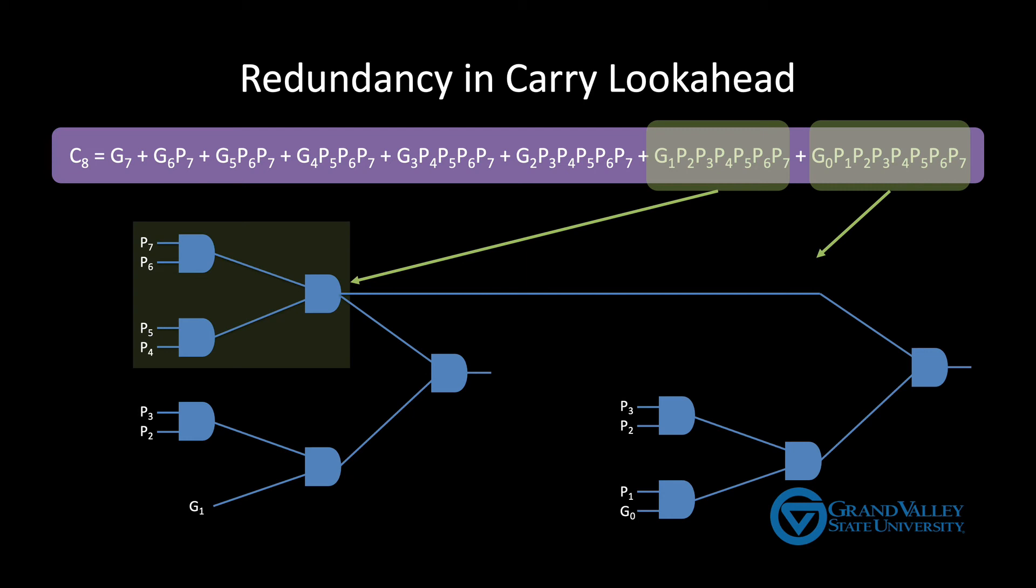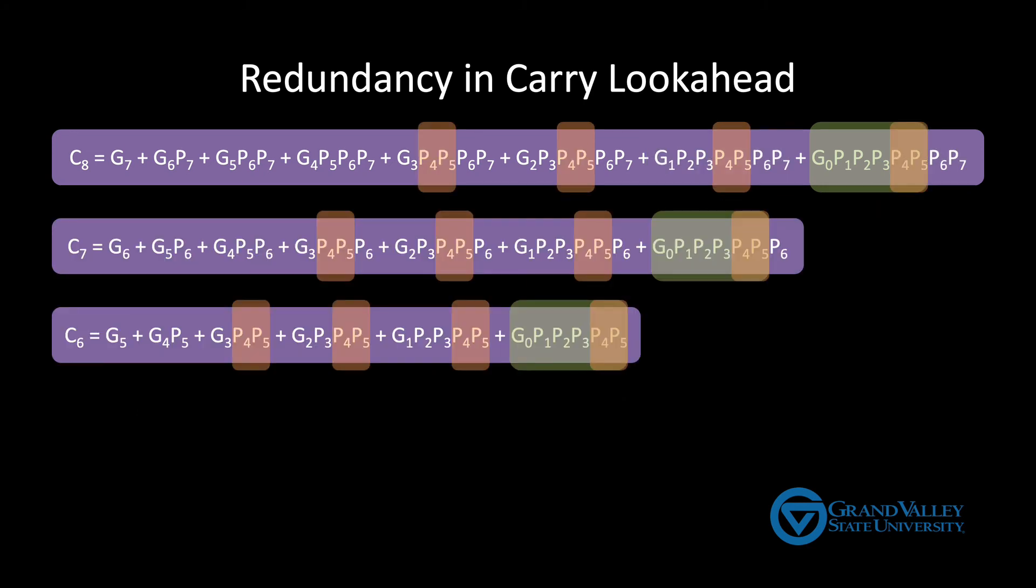Now, in the same way, there's also considerable redundancy among the different look-ahead sub-circuits. Here, we see two different examples of redundancy. One highlighted in green, and the other highlighted in orange. The challenge is how to leverage this redundancy to reduce size in a way that doesn't increase propagation delay.